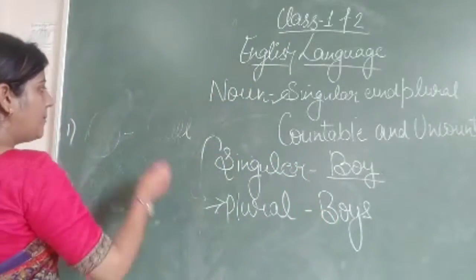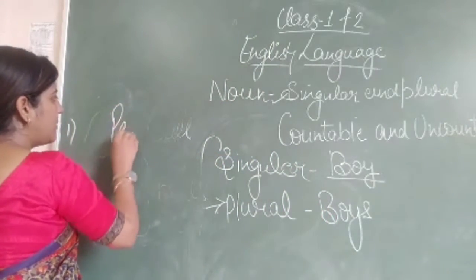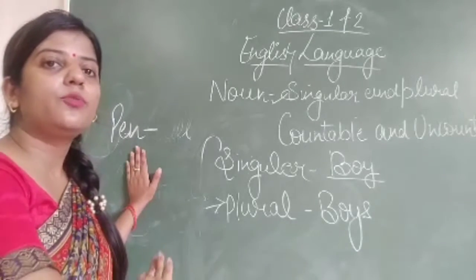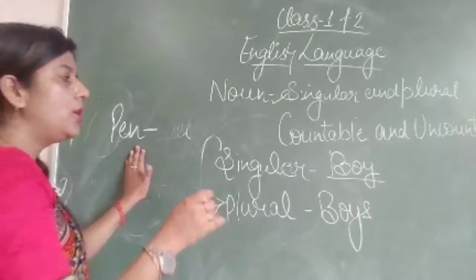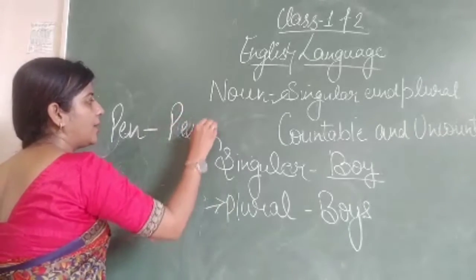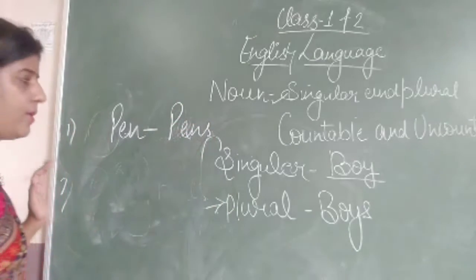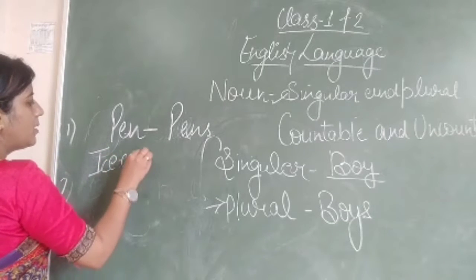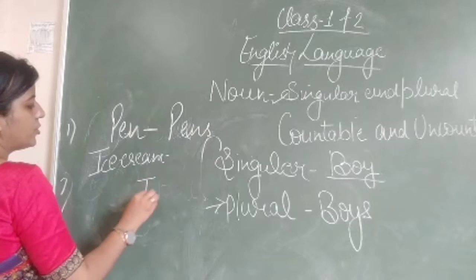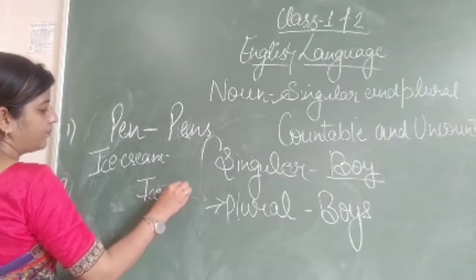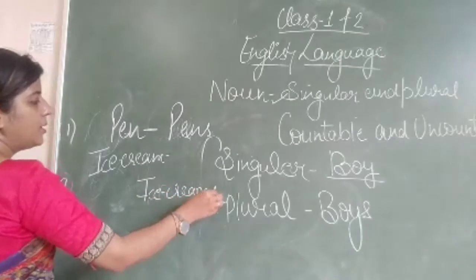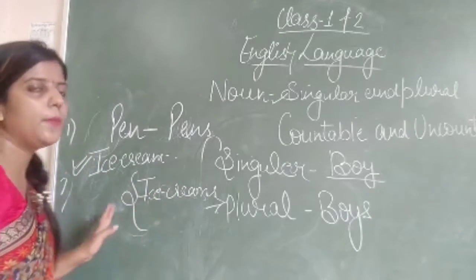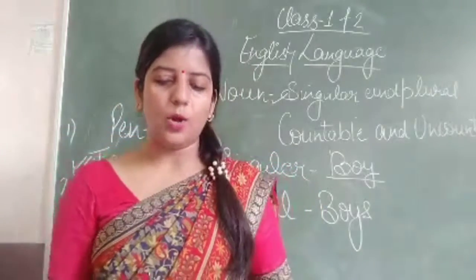More examples: 'pen' — if we want to convert pen from singular to plural, it becomes 'pens'. Similarly, 'ice cream' — if we convert it to plural, it becomes 'ice creams'. One ice cream is singular, and many ice creams is plural.